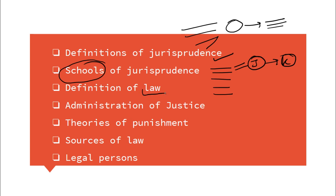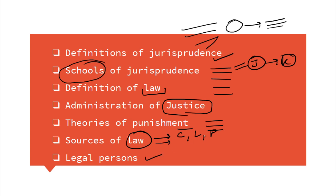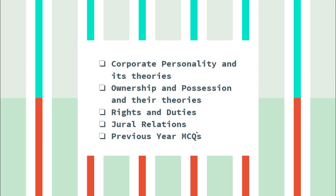I have also explained the definitions of law from different jurists, the administration of justice, and theories of punishment — all explained in one line each. After that, the sources of law: their essential ingredients, customs, legislation, precedence, and many others. Legal person is also a very important topic — especially for Uttarakhand and UP Judiciary — covering which categories of persons are treated as legal persons and which are not.